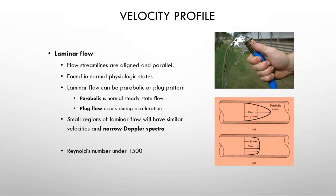Laminar flow lines are streamlined and parallel. Parabolic flow is a very normal steady-state flow, as opposed to plug flow, which occurs during acceleration. Any time there's acceleration — either due to a stenosis or because the heart is contracting — you will see plug flow. Plug flow is demonstrated on ultrasound by a very narrow Doppler spectra, meaning from top to bottom the spectra are very close together.